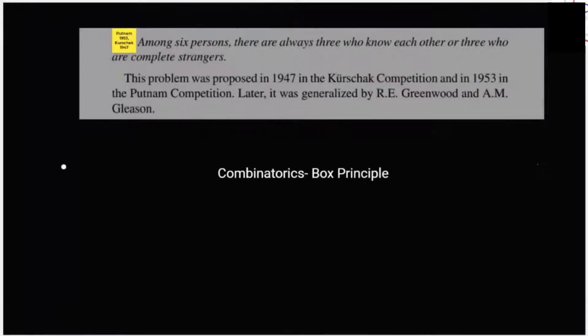The question says that if there are six persons - P1, P2, P3, P4, P5, and P6 - suppose there is a get-together, then either there are three who are friends or there are three who are completely strangers. So we need to show that.